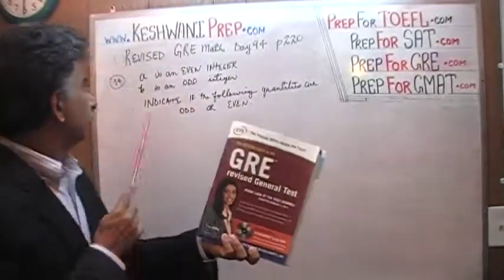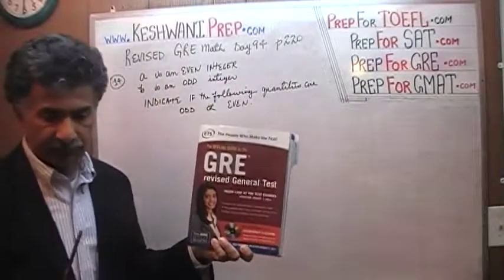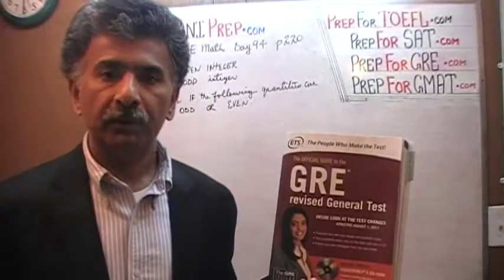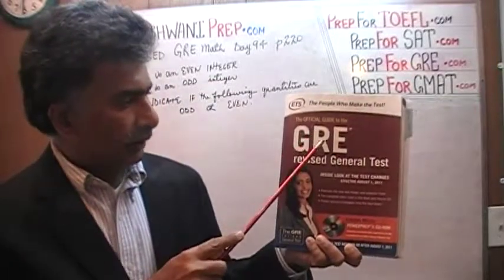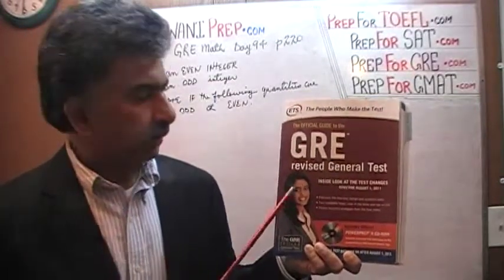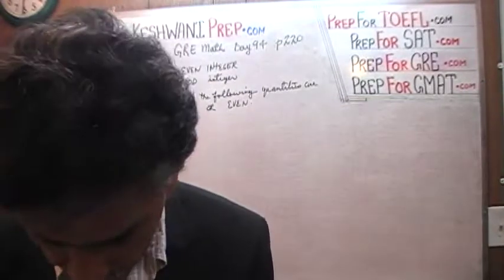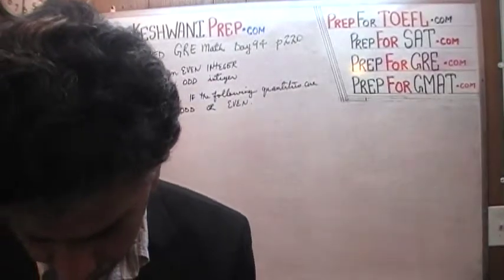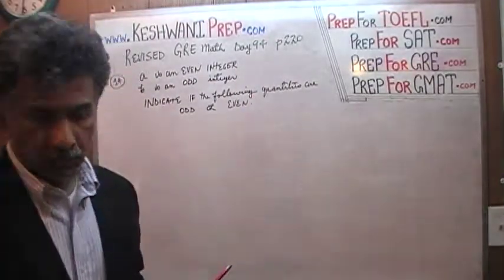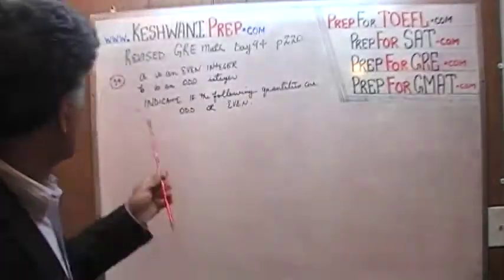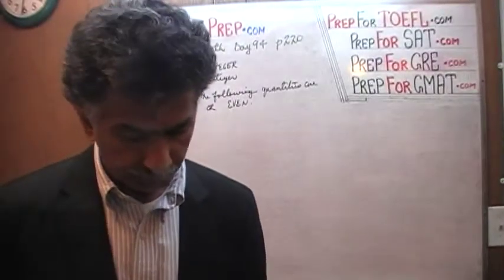Hello, my name is Keshwani — K-E-S-H-W-A-N-I. We are here because we want to prepare for the GRE. We have been solving math problems out of this book, the Official Guide to the GRE Revised. If you do not own this book already, purchase one immediately. The problem we are about to solve is on page 220. Today is lesson number 94, problem number 14. Turn to page 220, make sure the book is in front of you, and read the problem to yourself.